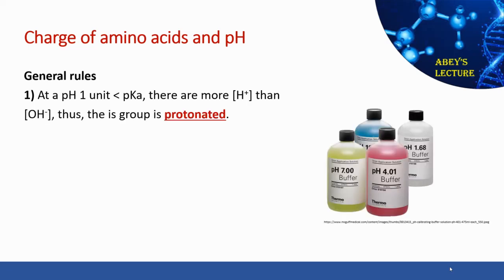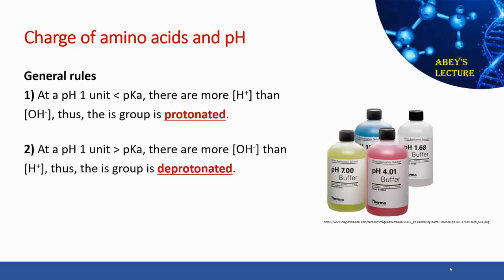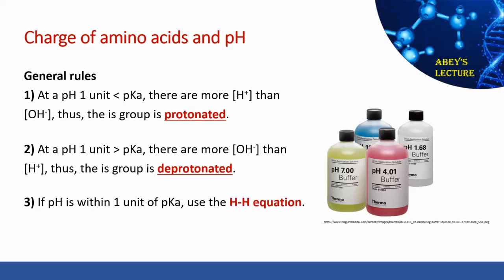When solving these problems, keep three rules in mind. First, if the pH is more than one unit smaller than the pKa, there are more hydrogen ions, and the group will be protonated. Second, if the pH is more than one unit higher than the pKa, there are more hydroxide ions, and the group will be deprotonated. Third, if the pH is within one unit of the pKa, use the Henderson-Hasselbalch equation.